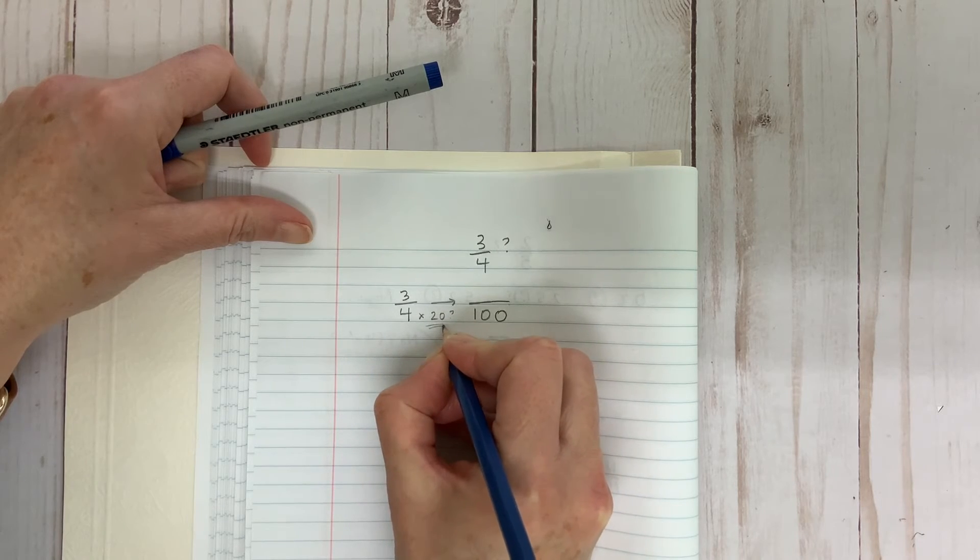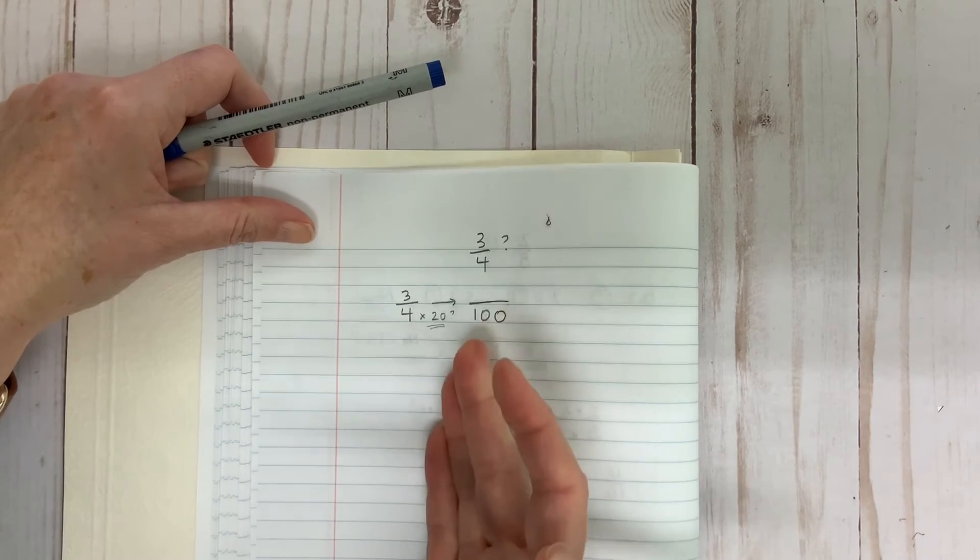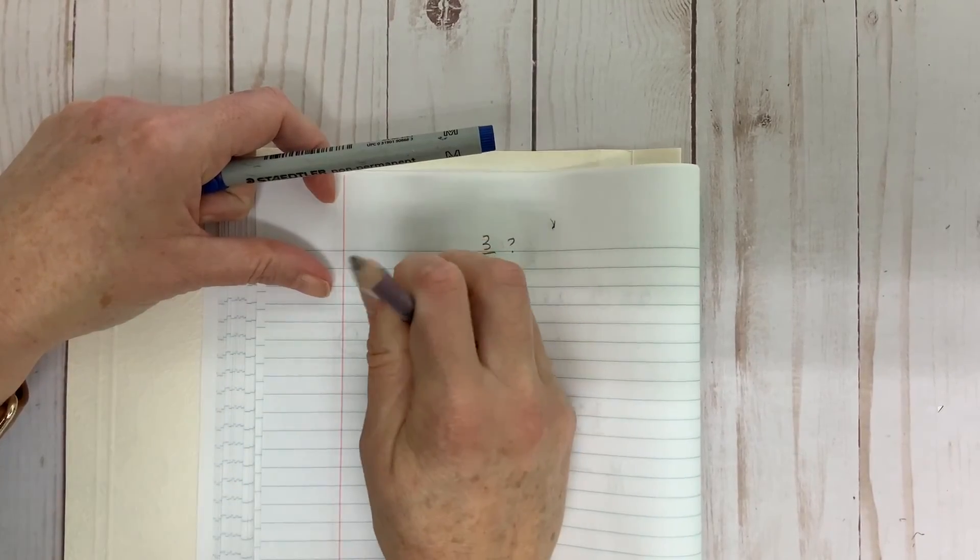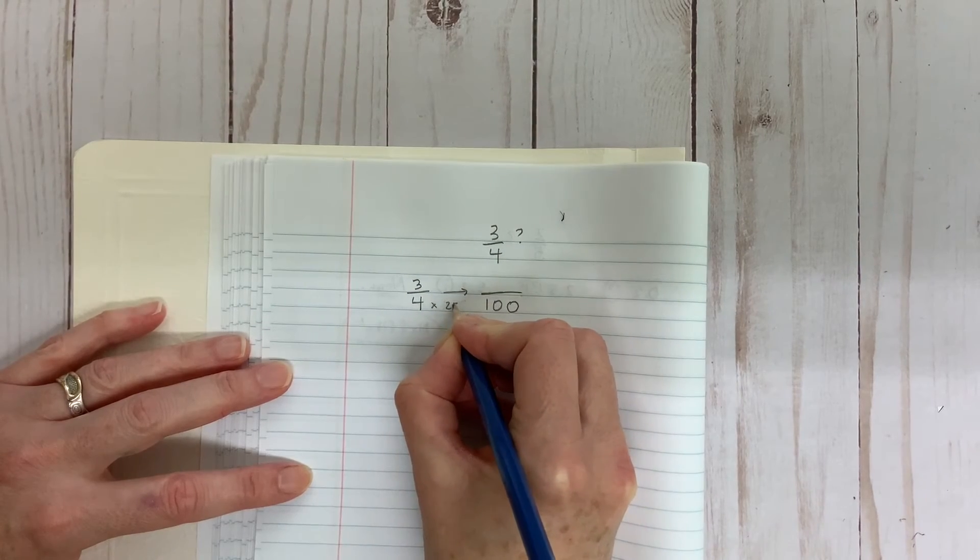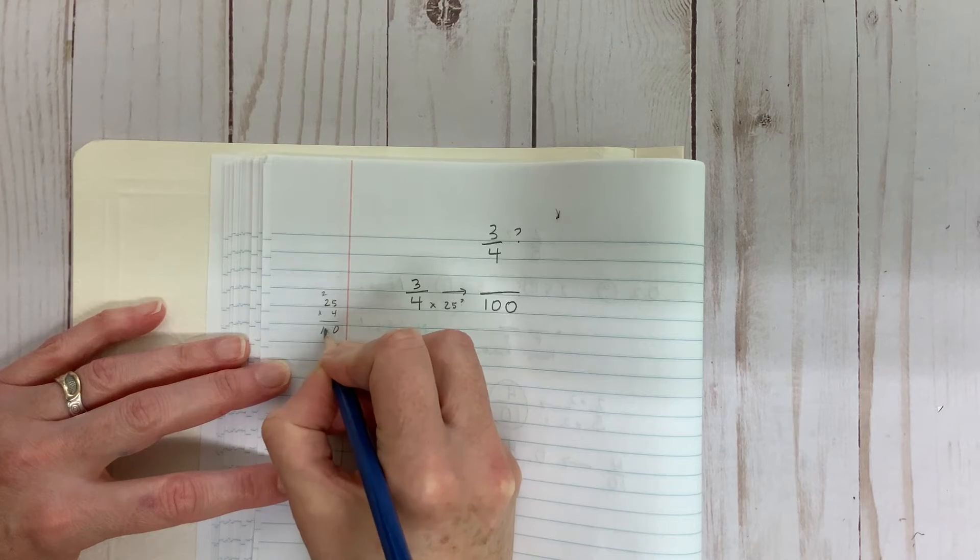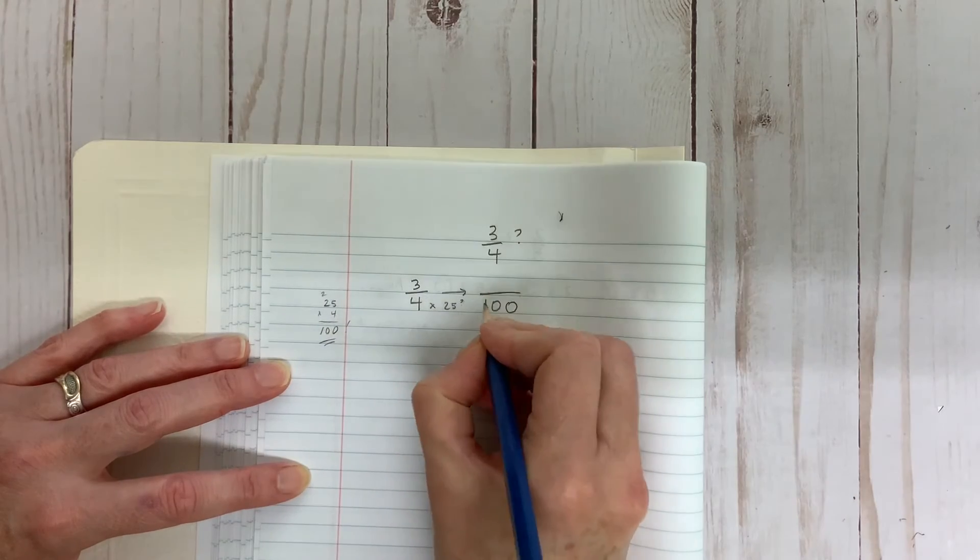Okay. How about multiplying by twenty? Four times twenty is eighty, so that's close. How about multiplying by twenty-five? Aha. There it is.